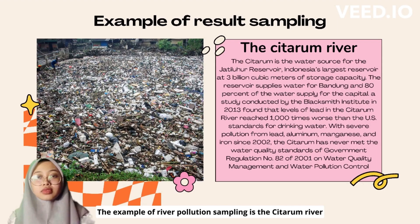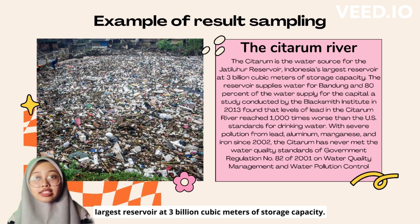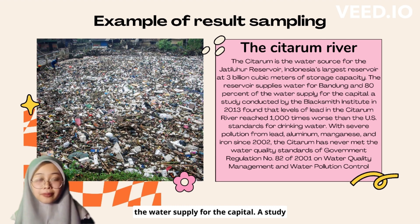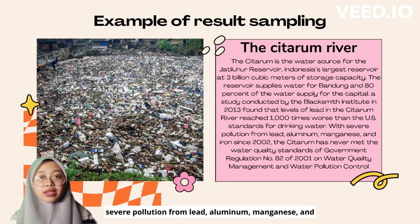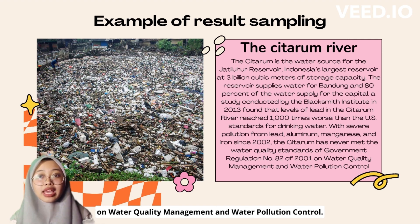The example of river pollution sampling is the Citarum River. The Citarum River is the water source for the Saguling Reservoir, Indonesia's largest reservoir at 3 billion cubic meters of storage capacity. The reservoir supplies water for Bandung and 18% of the water supply for the capital. A study conducted by the Blacksmith Institute in 2013 found that levels of lead in the Citarum River reached 1,000 times worse than the U.S. standard for drinking water, with several pollutants including lead, aluminum, manganese, and iron. Since 2002, the Citarum has never met the water quality standard of Government Regulation Number 82 of 2001 on water quality management and water pollution control.